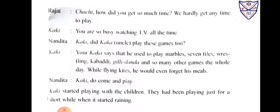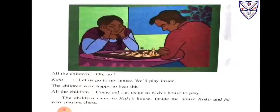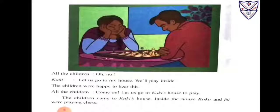Nandita invited Kakki to come and play. Kakki started playing with the children. They had been playing just for a short while when it started raining. All the children cried, 'Oh no!' Kakki said, 'Let us go to my house — we will play inside.' The children were happy to hear this and came to Kakki's house.